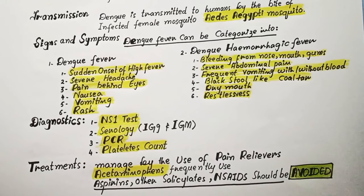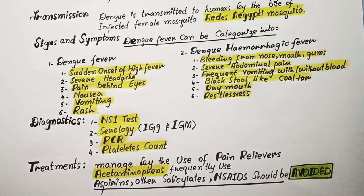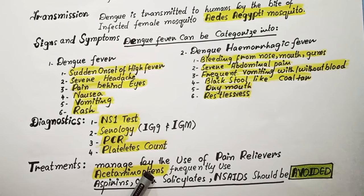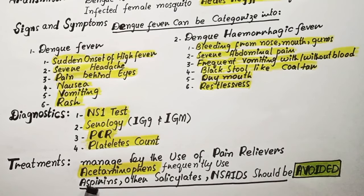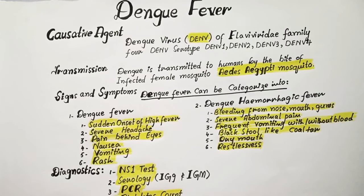Dengue fever cannot be cured but it can be managed using pain relievers such as acetaminophen. Aspirin, other salicylates, and non-steroidal anti-inflammatory drugs should be avoided, as these medications may worsen bleeding.